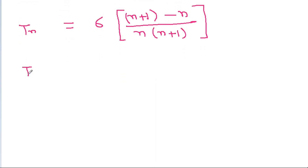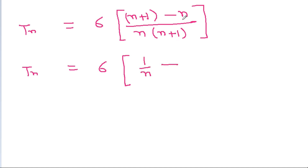Therefore tn is equal to 6 times [(n+1) divided by n(n+1)] minus [n divided by n(n+1)], which simplifies to 6 times [1/n minus 1/(n+1)].